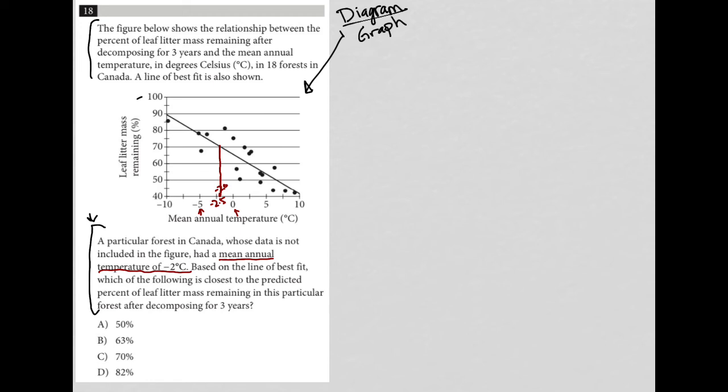And then I'm going to track that and say that number or that point corresponds pretty closely with 70 percent of leaf litter mass remaining. So maybe I go a tiny bit above it, but it's pretty close to 70 percent.